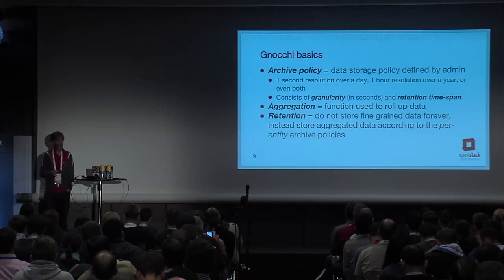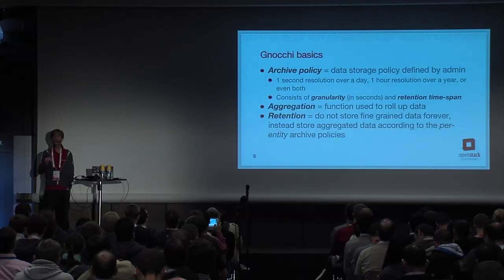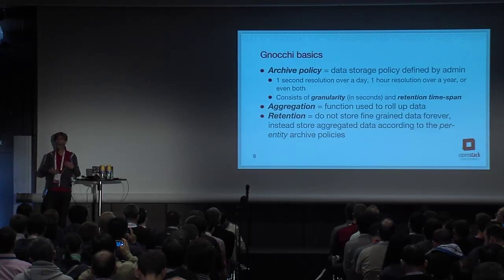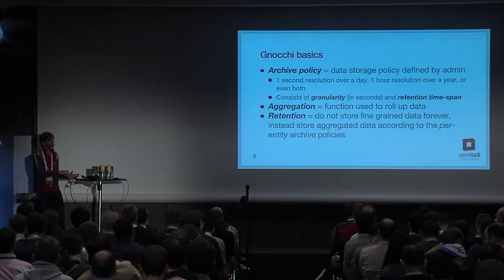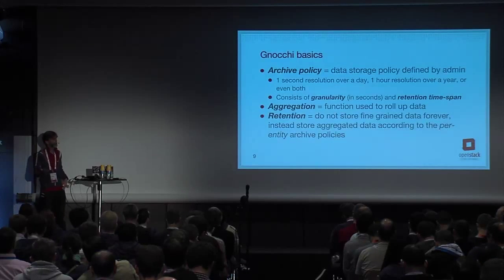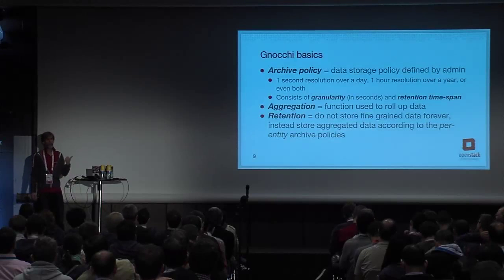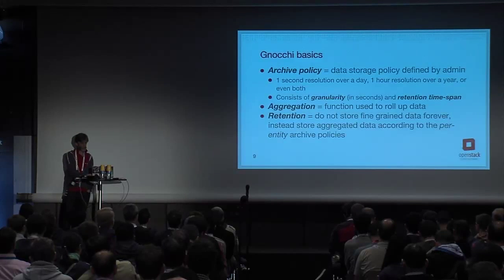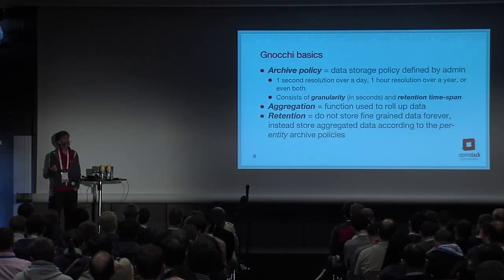Going a bit deeper: one more advanced concept in Gnocchi is the archive policy. Recall the gradual aging out of the system versus falling off a cliff. The archive policy drives that notion of gradual aging. An archive policy is basically a set of pairs, where each pair defines a granularity — how fine-grained or coarse-grained the data is — and also a retention time span. Typically, you could think of per-second data kept for a day, hourly data kept for a month, and daily data kept for a year. The archive policy drives both what grain values are rolled up to and how long they're kept around.